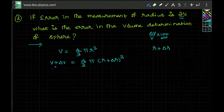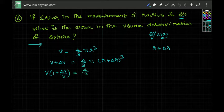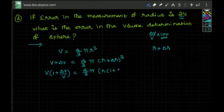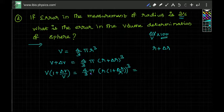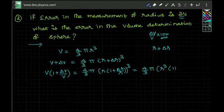Taking volume out, we get v times (one plus delta v by v) equal to four by three pi, taking r out with the whole power three, giving r cubed times (one plus delta r by r) whole cube. This can be written as four by three pi r cube into (one plus delta r by r) whole cube.